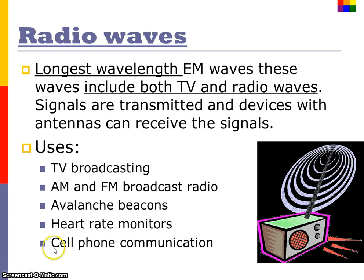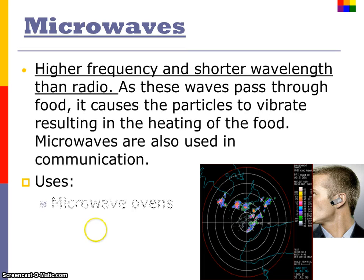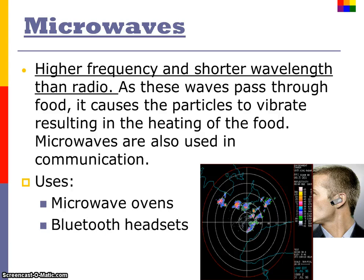Cell phone communication is also a radio wave. Cell phones operate on electromagnetic radiation that does not require a medium, which means cell phone signals would travel through space. Microwaves are a little bit higher frequency, so they have a little bit more power than a radio wave.